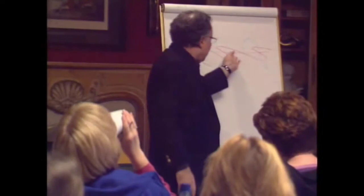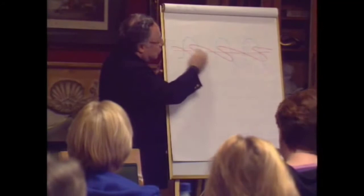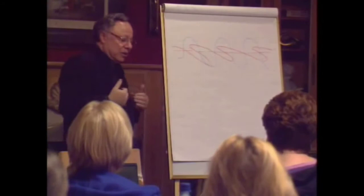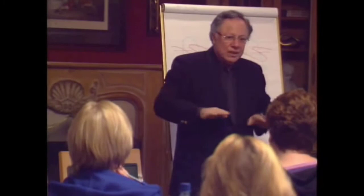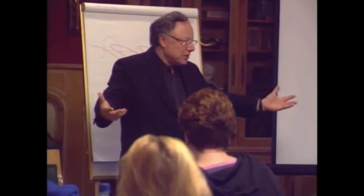Every thing in nature has either the two waves or one wave. Humanity has only the horizontal wave. Our wavelengths, our fields, move horizontal. When we emit waves, they move horizontal. All things that are good for us have horizontal waves.